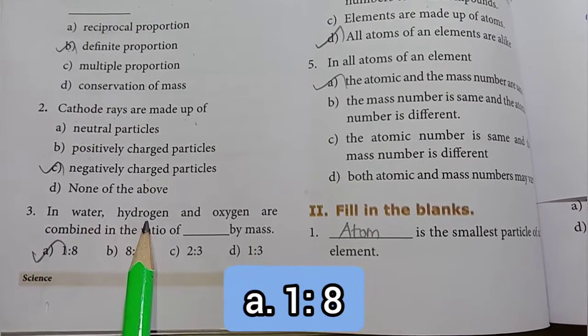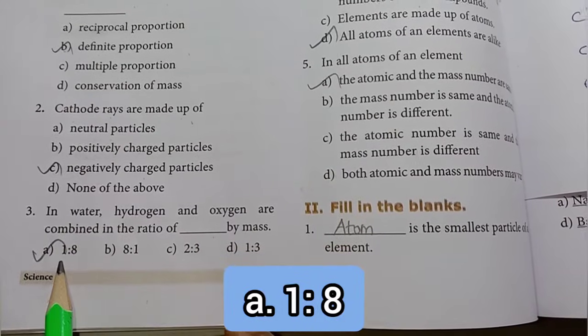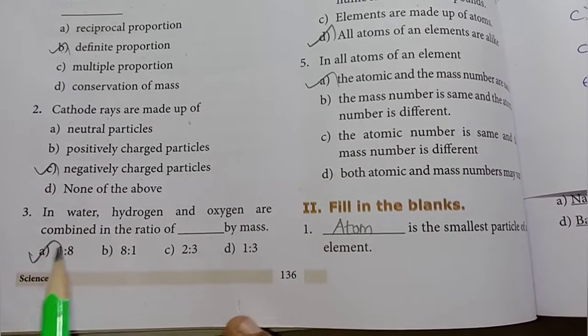Third one: In water, hydrogen and oxygen are combined in the ratio of blank by mass. Option A, 1 is to 8, is the right answer.